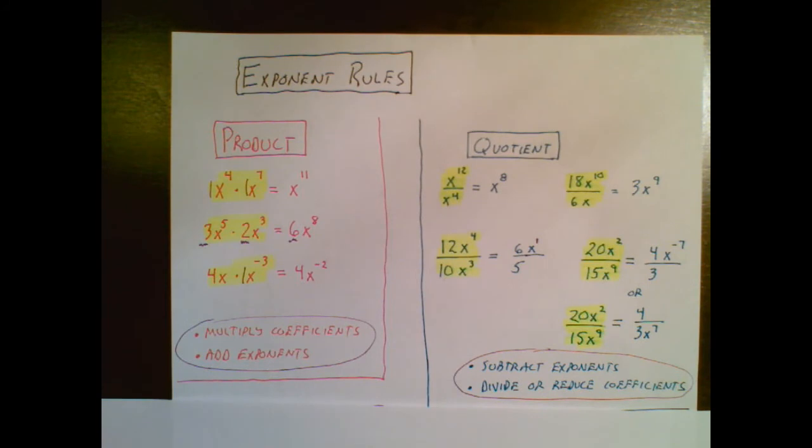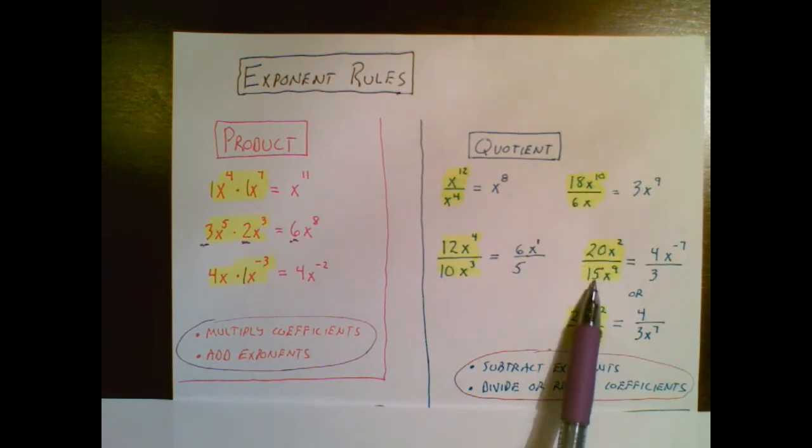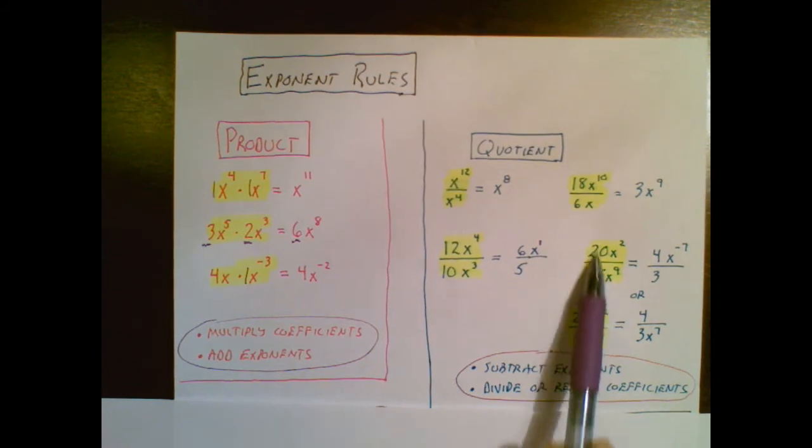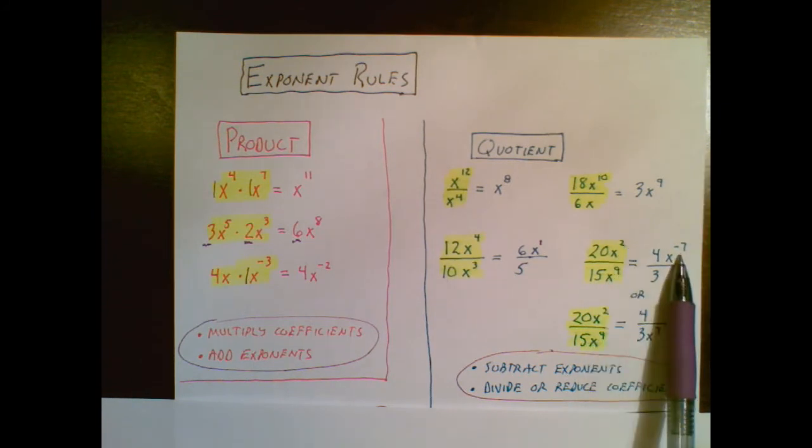Now let me show you something about the subtract the exponents thing. I'm going to look at this problem right here. The 20 and the 15 they're their coefficients so we're going to reduce those because they don't divide evenly. Five divides into each for four-thirds but let's look at the exponents. When I divide exponents I must subtract so 2 minus 9 gives me negative 7 or x to the negative 7.